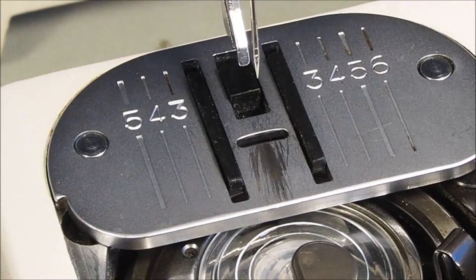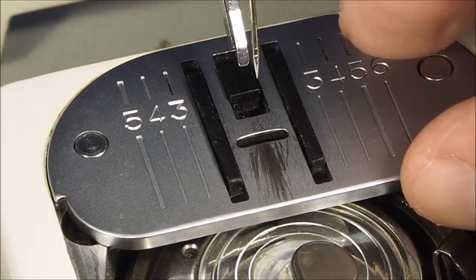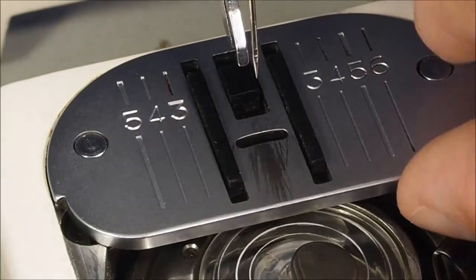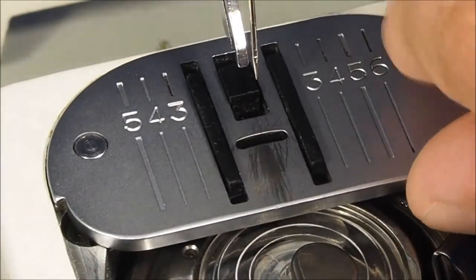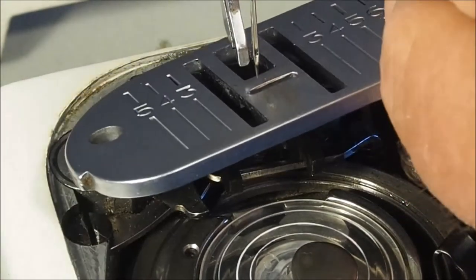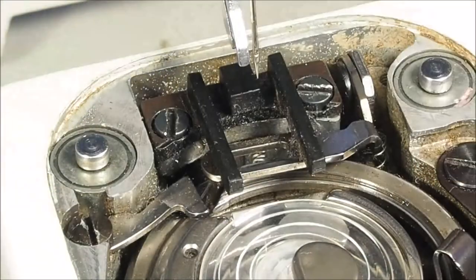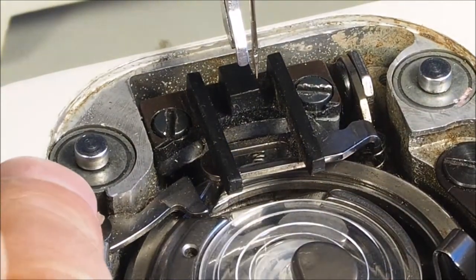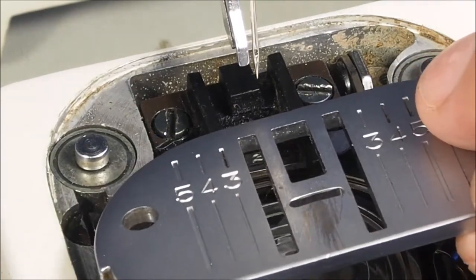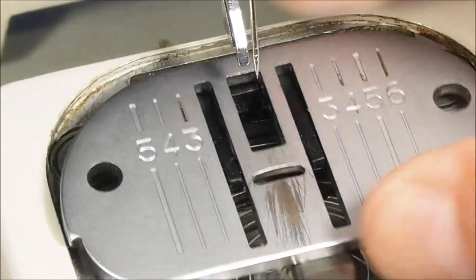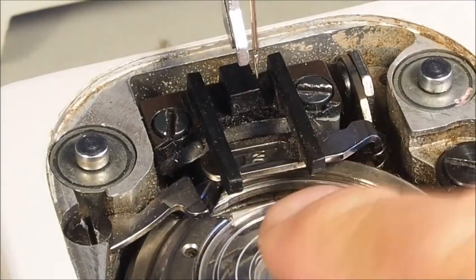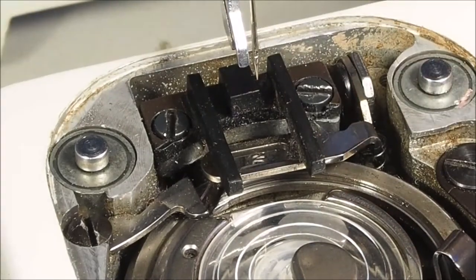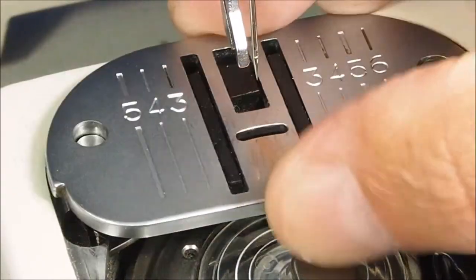The other handy feature was no screws required to remove the throat plate. Just get your thumb under there and pull up. It's held on by these two posts with magnets around them, which magnetize the plate into position. That was quite handy for getting in there and cleaning between the feed dogs to get lint out.